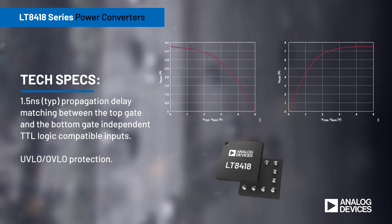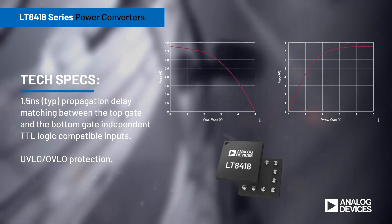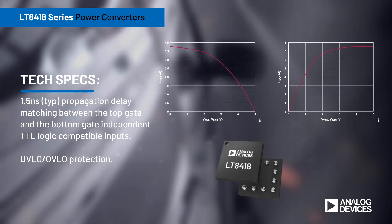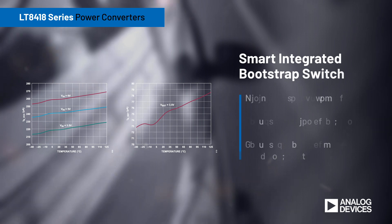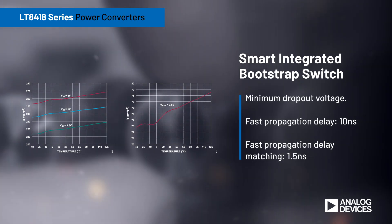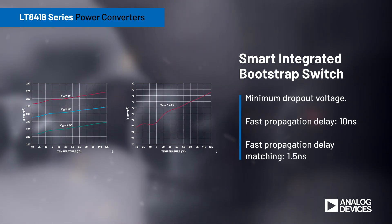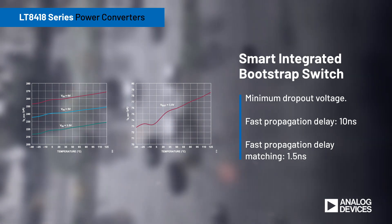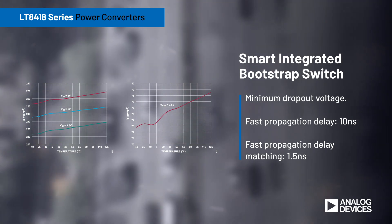The undervoltage and overvoltage lockout functionality offers additional protection for the external GaN FETs. A smart bootstrap switch maximizes regulator efficiency with minimum dropout voltage, ensuring operation within the maximum ratings of the GaN FET.